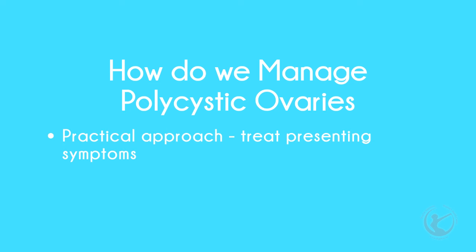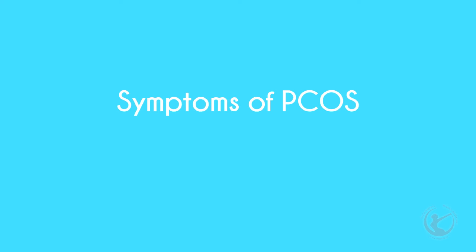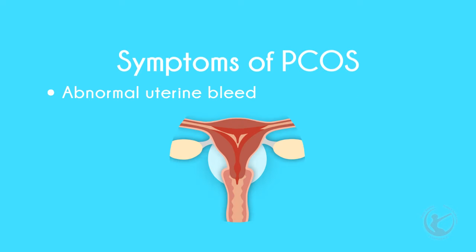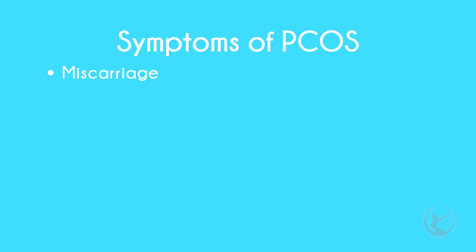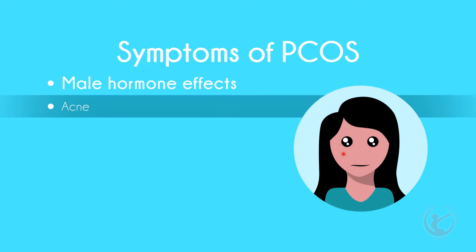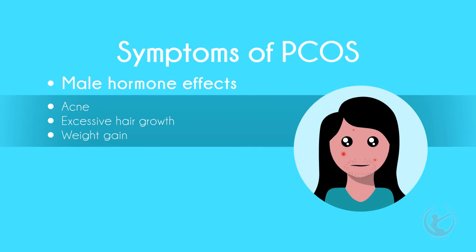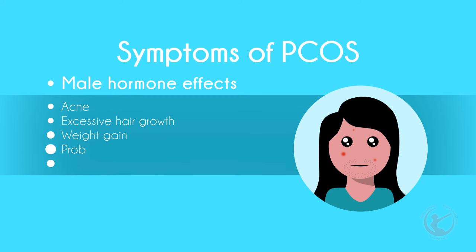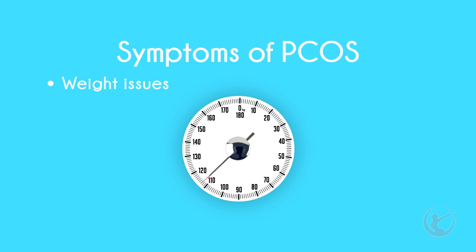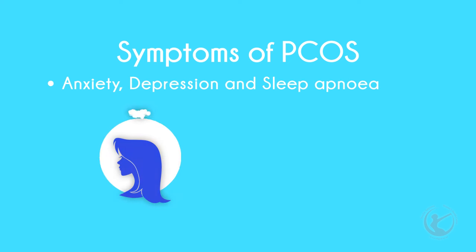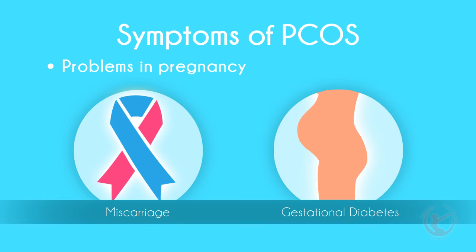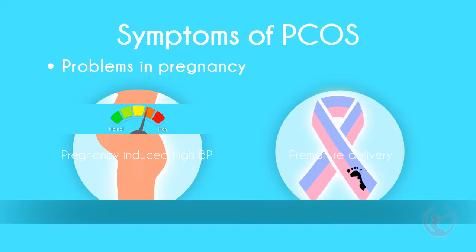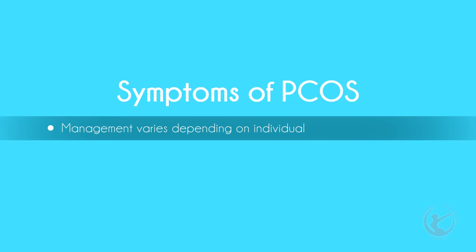A practical approach to management is to treat just the presenting symptoms. So what are the symptoms of polycystic ovarian disease? Abnormal uterine bleeding, anovulation, miscarriage, male hormone effects including acne, excessive hair growth, weight gain, problems with ovulation, and amenorrhea — which means no periods. Weight issues in general, anxiety, depression, and sleep apnea may occur. There may also be problems in pregnancy, which include miscarriages, gestational diabetes, pregnancy-induced blood pressure, and premature delivery. Management has to be individualized, as some women have one and some women have many of the symptoms described above.